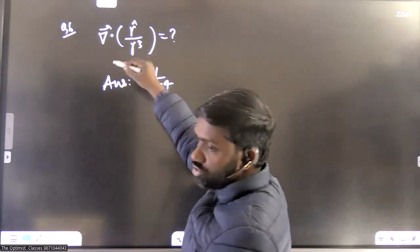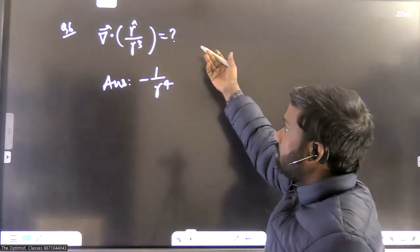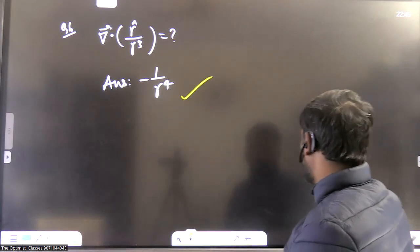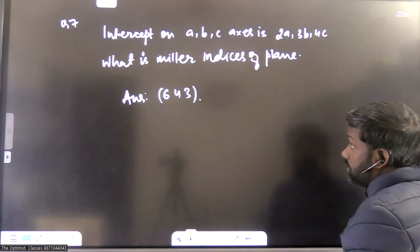Now, this is a divergence to be calculated. You can just apply the formula in spherical polar coordinate. In just one line, you will get the answer: 1 by r plus 4, minus 1 by r power 4.